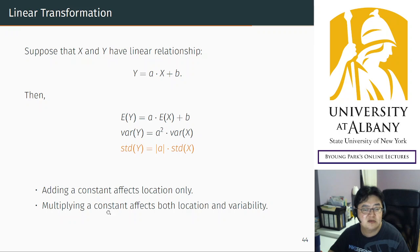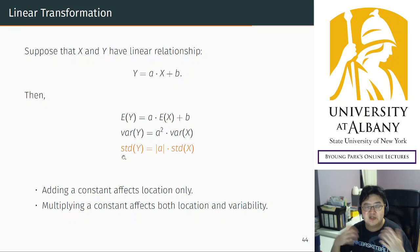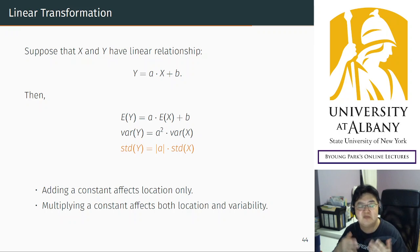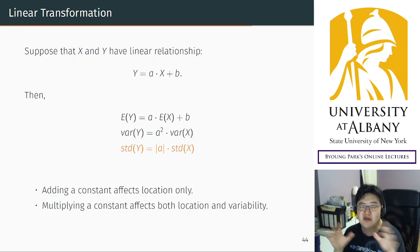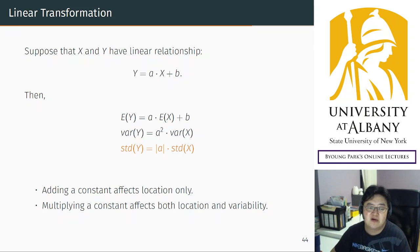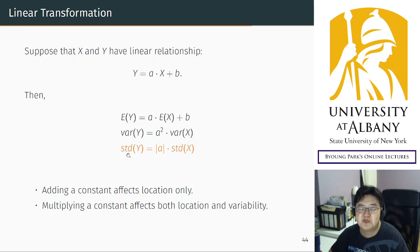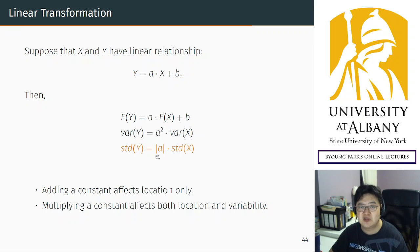The same intuition holds: addition of B has no effect on standard deviation, because standard deviation is a measure of variability and adding a number has no effect on the distances — everything moves together. Multiplication changes the standard deviation, but proportionally and without its sign. So this is exactly what we wanted.